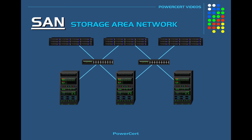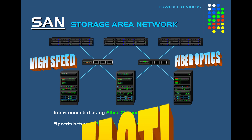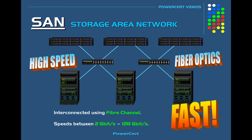A SAN is a high speed network because all the devices are interconnected — meaning all of the devices are connected to each other. They are interconnected using Fiber Channel, which is the standard for SANs. Fiber Channel uses fiber optics and has speeds between 2 gigabits per second all the way up to 128 gigabits per second. So Fiber Channel is extremely fast, but it is also very expensive.